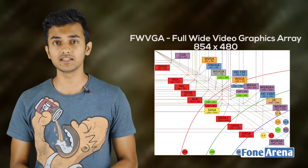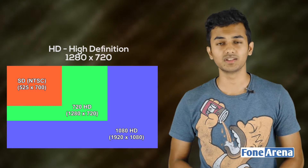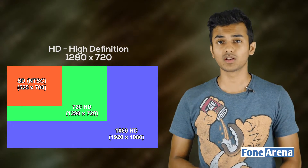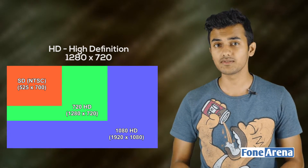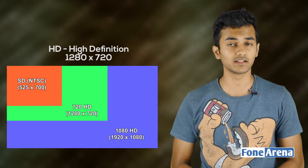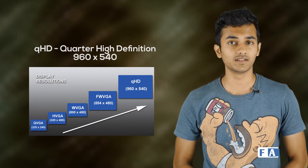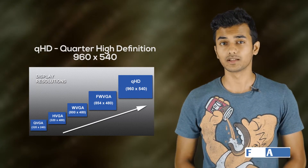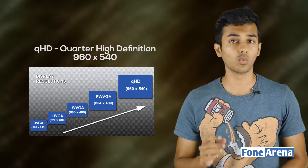FWVGA has the same height as VGA but a wider width. The next type is HD — High Definition — with a resolution of 1280x720 pixels. After that is QHD — Quarter HD — with a resolution of 960x540 pixels, which is a quarter of Full HD.